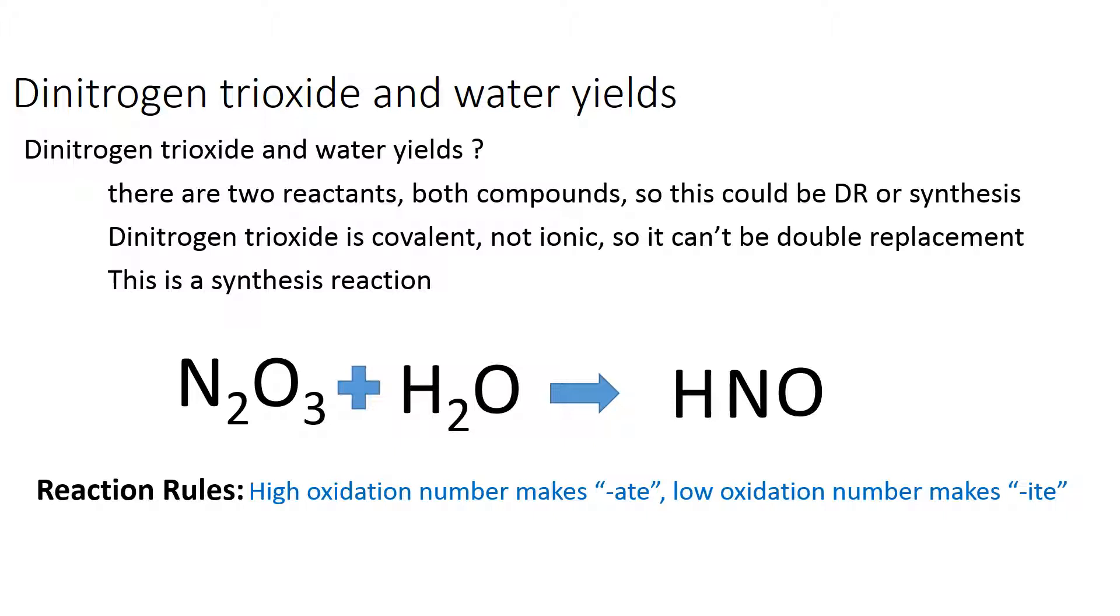So we need to get the oxidation number of the nitrogen. Nitrogen can have any of these oxidation numbers: minus 3, plus 3, or plus 5.